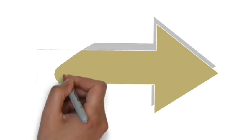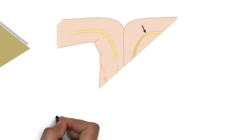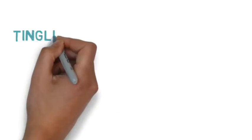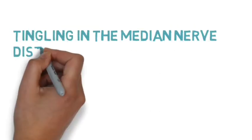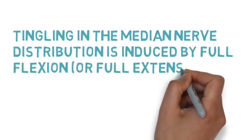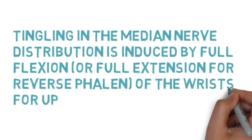The most common special test is Phalen's maneuver or Phalen's test. It involves tingling in the median nerve distribution when holding the wrist in full flexion, or extension for reverse Phalen's test, for 60 seconds.